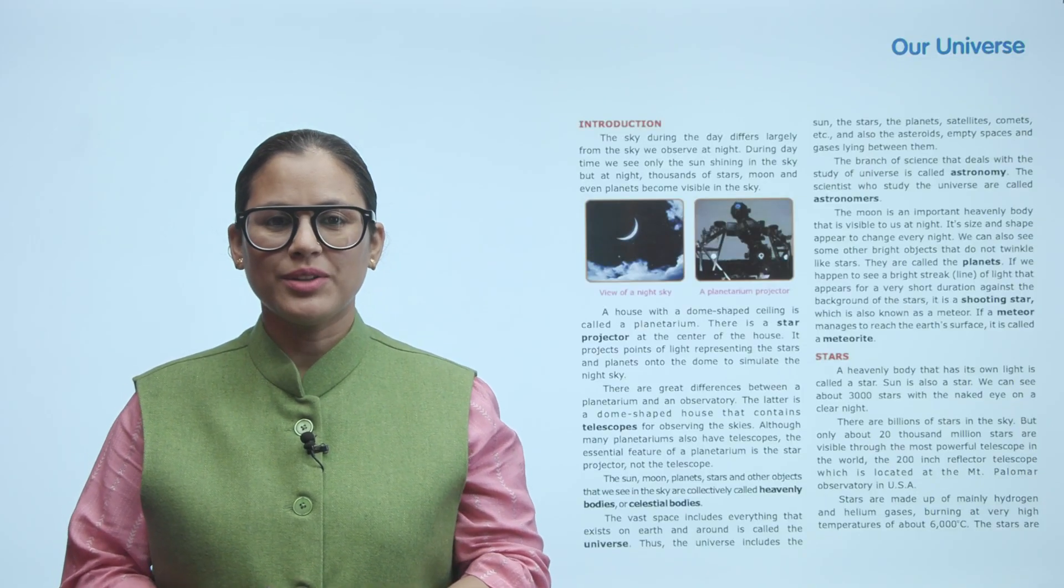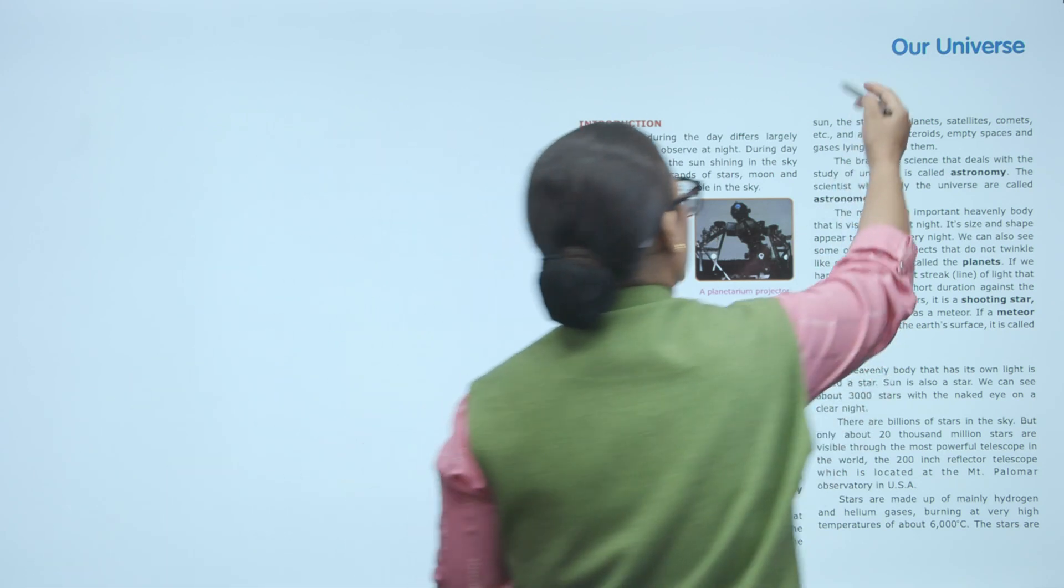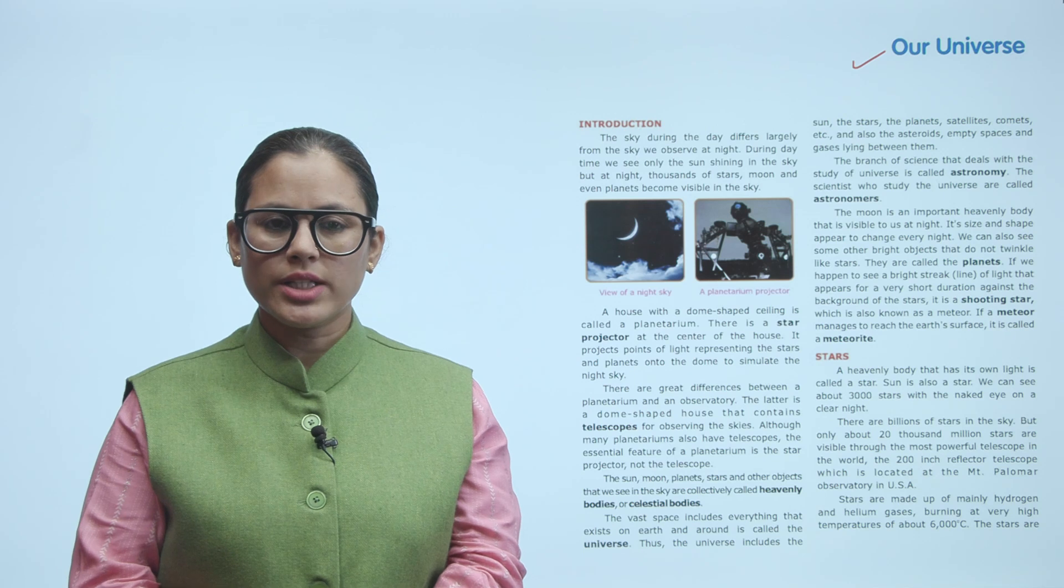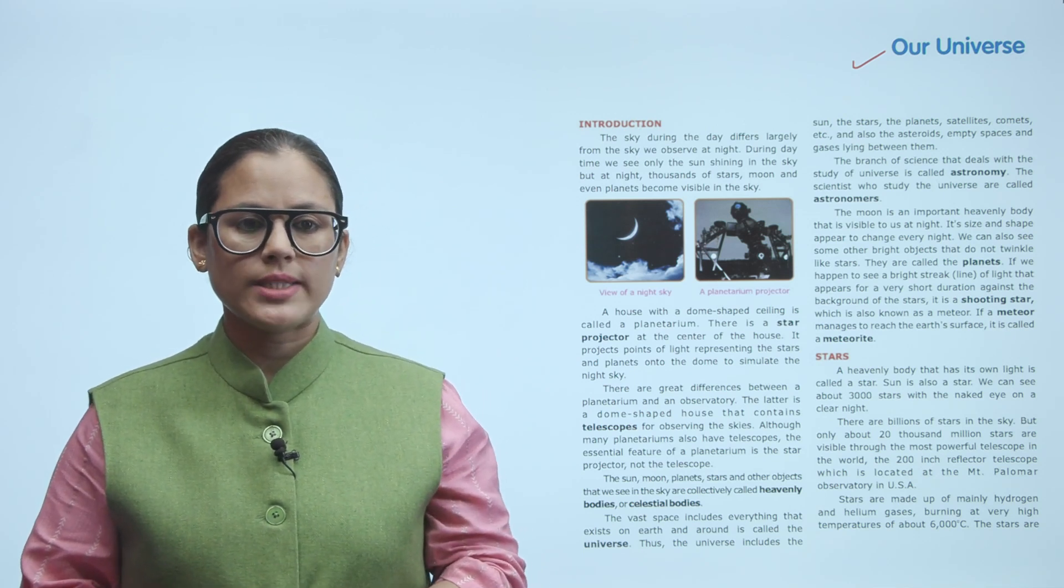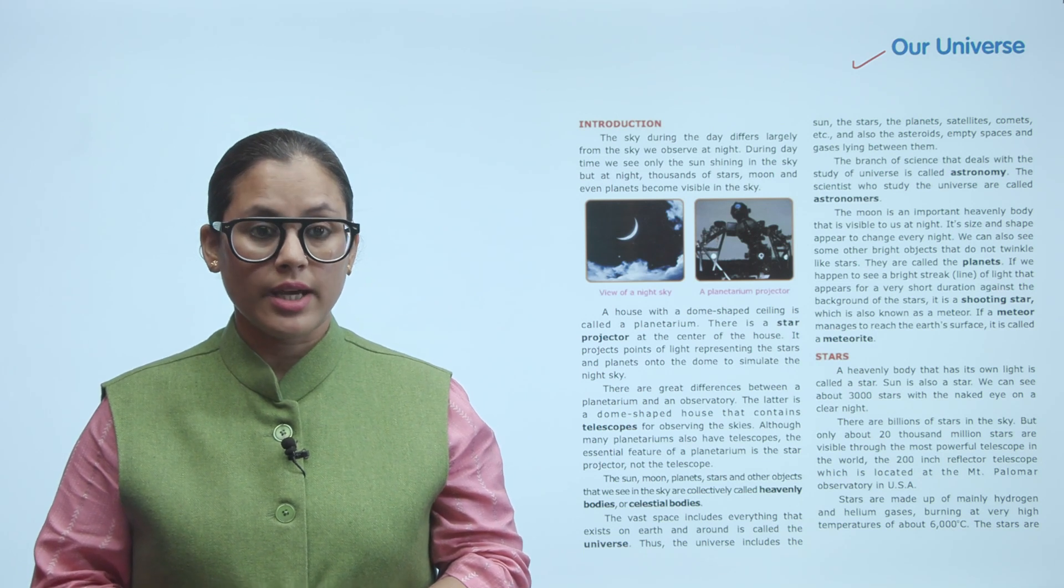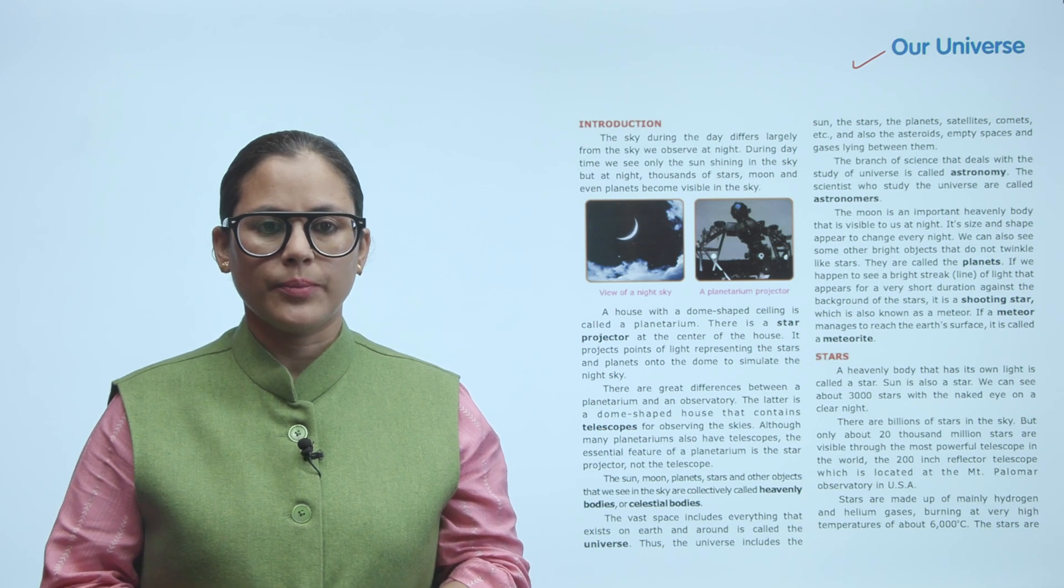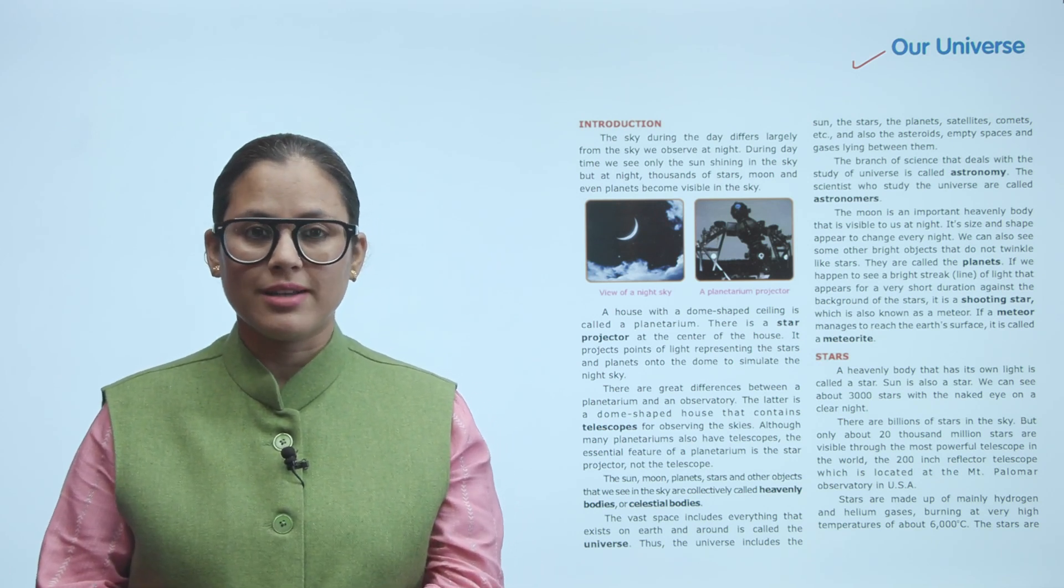Hello children, hope you're all doing good. Let's start today's chapter, Our Universe. Introduction: The sky during the day differs largely from the sky we observe at night. During daytime we see only the sun shining in the sky, but at night thousands of stars, moons, and even planets become visible in the sky.